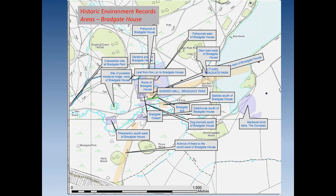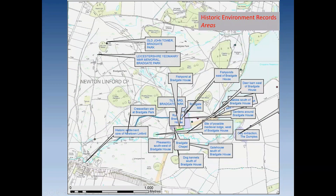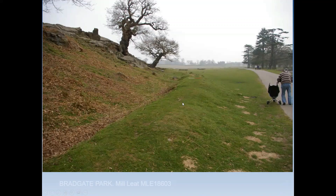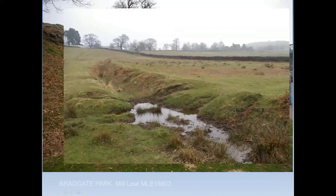An interesting feature is the leat, which left the River Lin in Little Matlock Gorge. If you walk in from the Newtown Linford car park, you'll see it — a bank that would have held a running stream of water on its left-hand side as you approach the house ruins. Further into the park the leat is quite sharply built with waterlogged areas, and the house remains sit on a slight knoll.